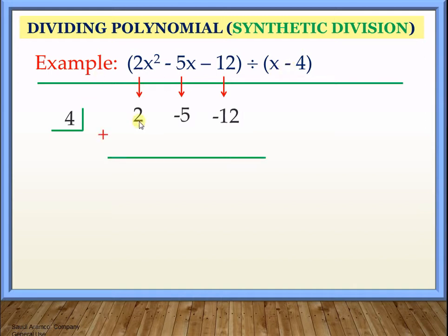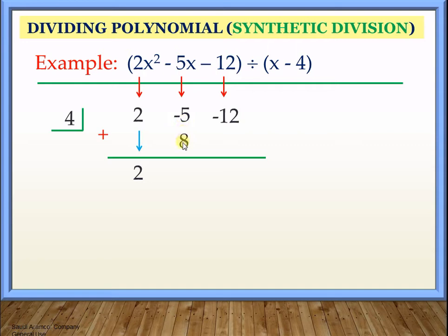The first step, once we already have everything we need, is to just drop the first value here. So this will become 2. Once we have a 2 here, all we need to do is multiply it by 4. So 4 times 2 will give us 8. Then we perform the operation: negative 5 plus 8 will give us 3.